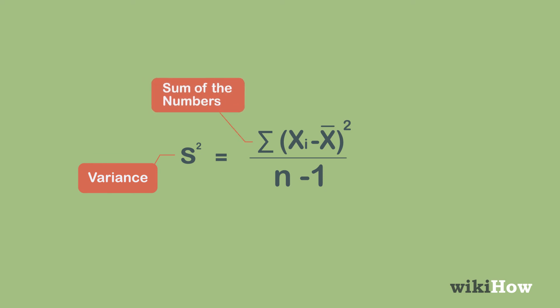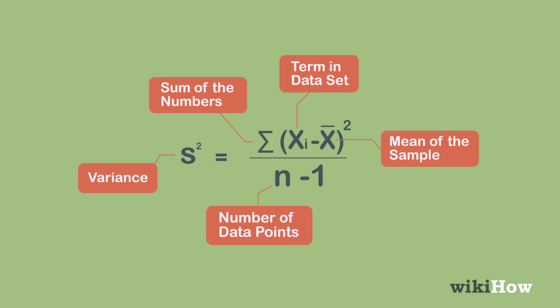sigma means to find the sum of the numbers, x sub i is a term in the data set, x bar is the mean of the sample, and n is the number of data points.